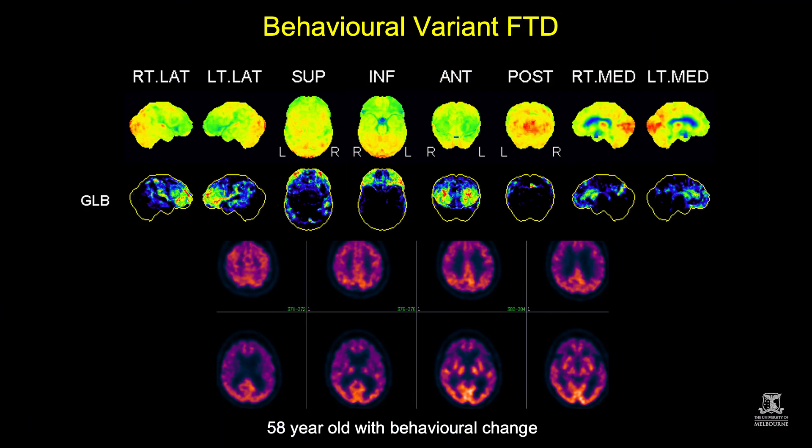This is a patient, 58 years old, who presented with behavioural changes. It was uncertain whether this was on a psychiatric basis or frontotemporal dementia, and the FDG-PET clearly shows severe frontal hypometabolism in a pattern that is classic for frontotemporal dementia.